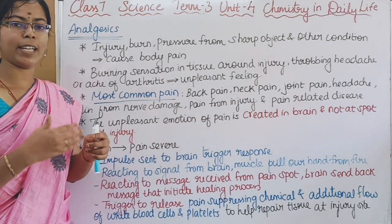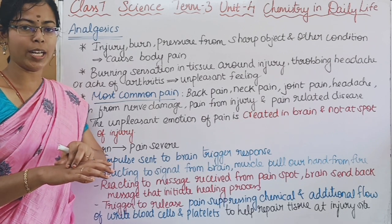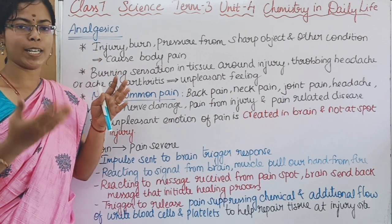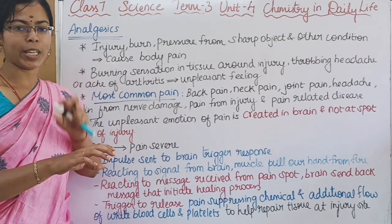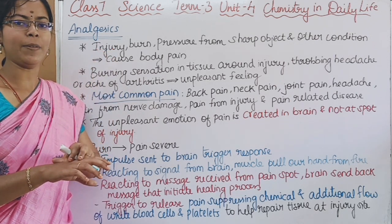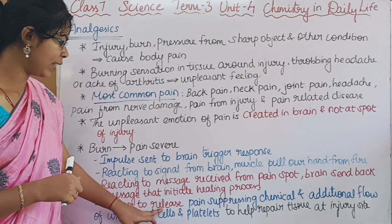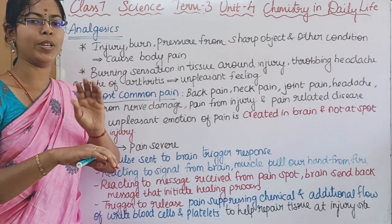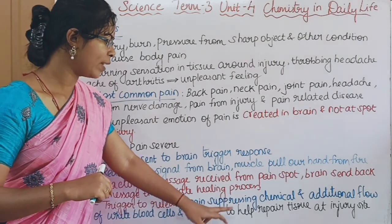When we injure our body, we send an impulse message to our brain. The brain will respond quickly to the muscles. The brain will start the healing process and trigger the release of pain-suppressing chemicals. The body will suppress the pain and increase blood flow of white blood cells and platelets to repair the tissue at the injury site.